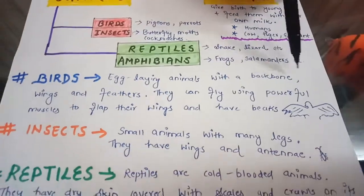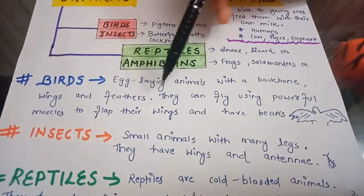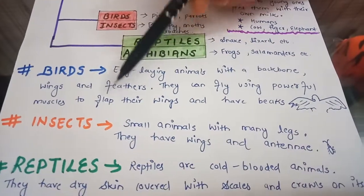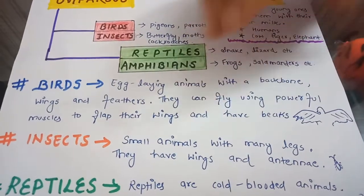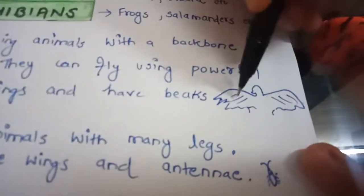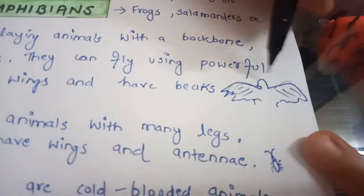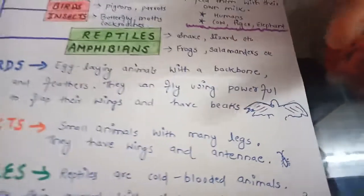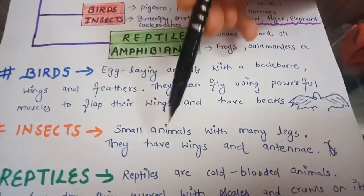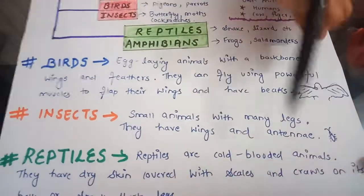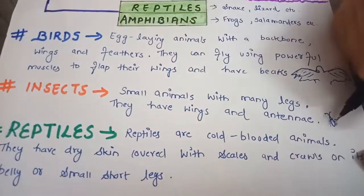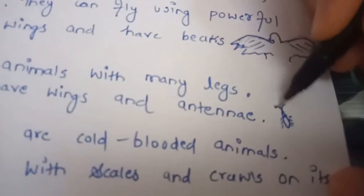Birds are egg-laying animals with a backbone, wings, and feathers. They can fly using powerful muscles to flap their wings, and they have beaks — not teeth. Their wings are very powerful, which is why they can travel from one place to another so easily. Insects are small animals with many legs, and they have wings and antennae — examples include cockroaches and butterflies.